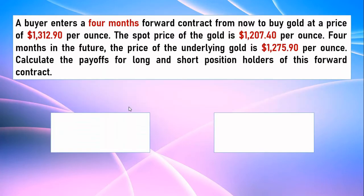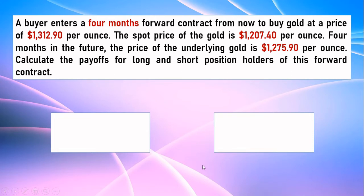Let's start with the first problem. A buyer enters a four-month forward contract to buy gold at a price of $1,312.90 per ounce. The spot price of gold is $1,207.40 per ounce, and four months in the future the price of the underlying gold is $1,275.90 per ounce. Calculate the payoff for the long and short position holders for this forward contract.